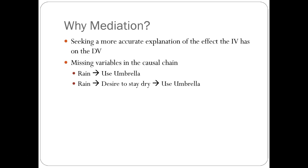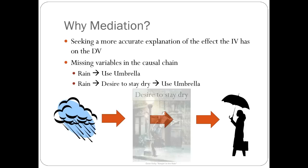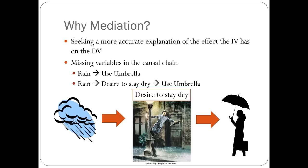So why even consider mediation? Why not just predict and test direct effects? Often the reason is because we believe that some x really does have an effect on some y, but we want to ensure that there is not a more accurate explanation for this cause and effect relationship. For example, let's say we want to predict what causes some people to either use an umbrella or not. We may say that rain causes this effect. However, this does not explain why many people do not use an umbrella when it rains. Thus, we can explain more of the observed behavior in our sample if we include a mediator called desire to stay dry. Rain causes those who wish to remain dry to use an umbrella when it rains, and those who do not have this desire do not use an umbrella. So in this example, desire to stay dry mediates the effect rain has on using an umbrella.